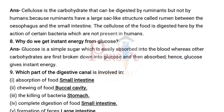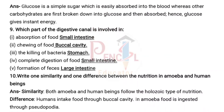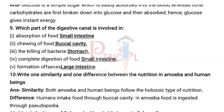Eighth question: Why do we get instant energy from glucose? Answer: Glucose is a simple sugar which is easily absorbed into the blood, whereas other carbohydrates are first broken down into glucose and then absorbed. Hence glucose gives instant energy.